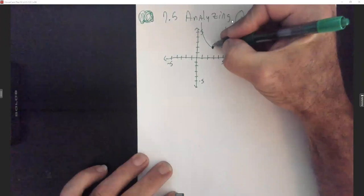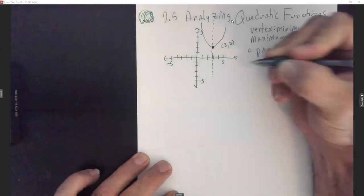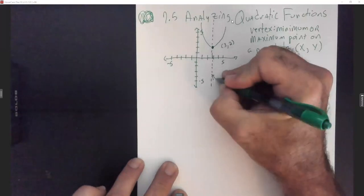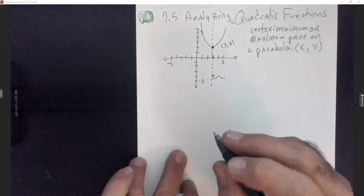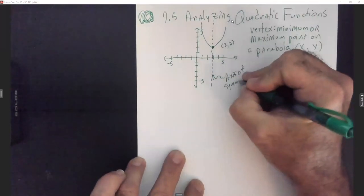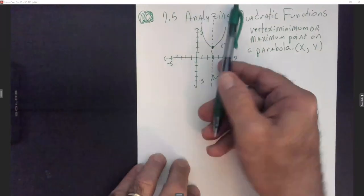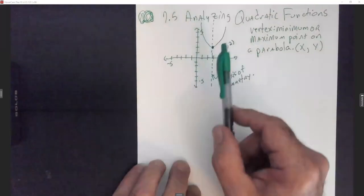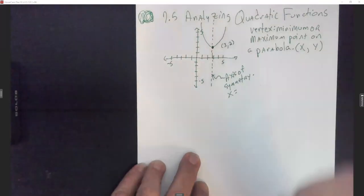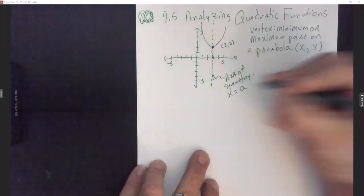If I drew an imaginary dotted line cutting my parabola in half, this imaginary line is what I would call the axis of symmetry. Because it's now symmetric to that line I drew — if I fold my graph over this line, it lands right on itself. The axis of symmetry comes in equation form: x equals whatever that number is.